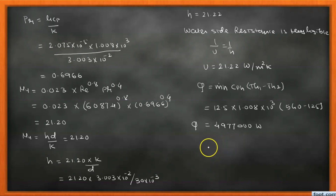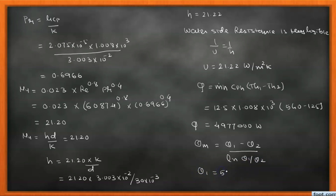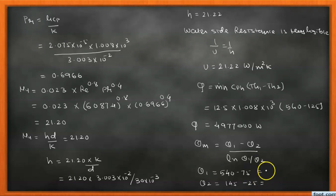We now calculate the LMTD: θ_m = (θ1 − θ2) / ln(θ1/θ2). For a counterflow arrangement, θ1 = 540 − 75 = 465°C and θ2 = 145 − 25 = 120°C. Substituting these values gives θ_m = 254.69°C.